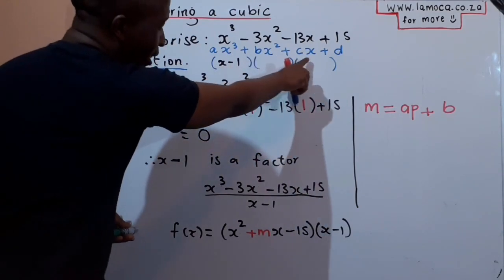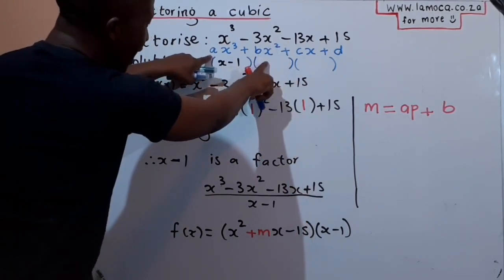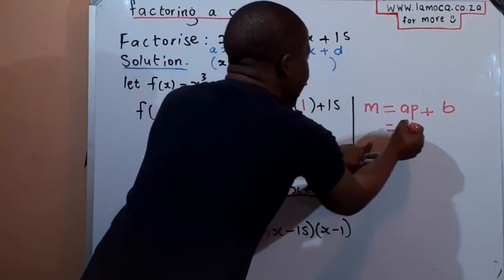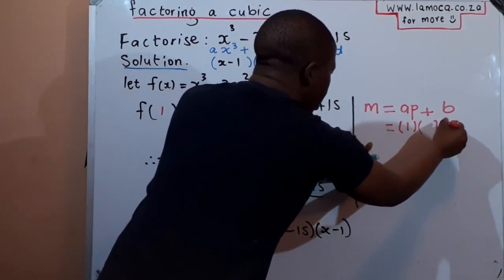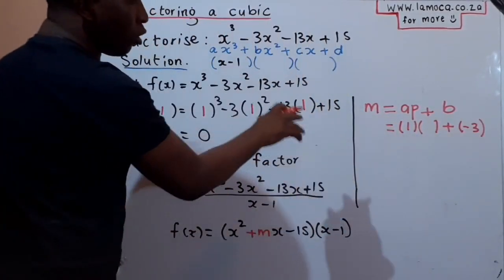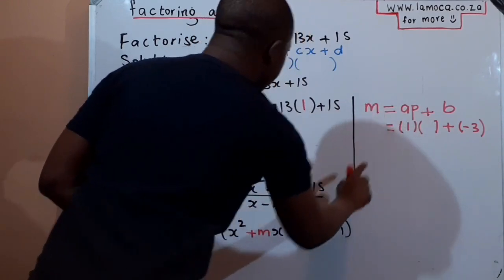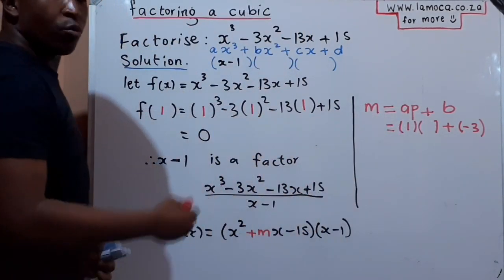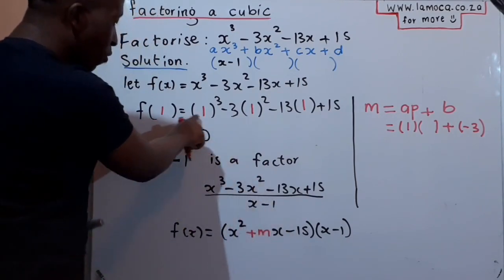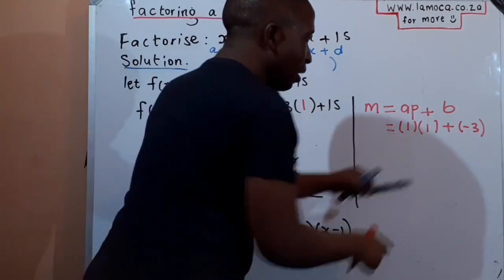According to our agreed form, any cubic expression ax³ + bx² + cx + d has a and b as the coefficients of x³ and x² respectively. So my a value is 1 and my b value is -3, taken directly from the cubic expression. The p value comes from the root you used in your trial and error — in this case p = 1. The formula is m = ap + b, so we substitute these values.